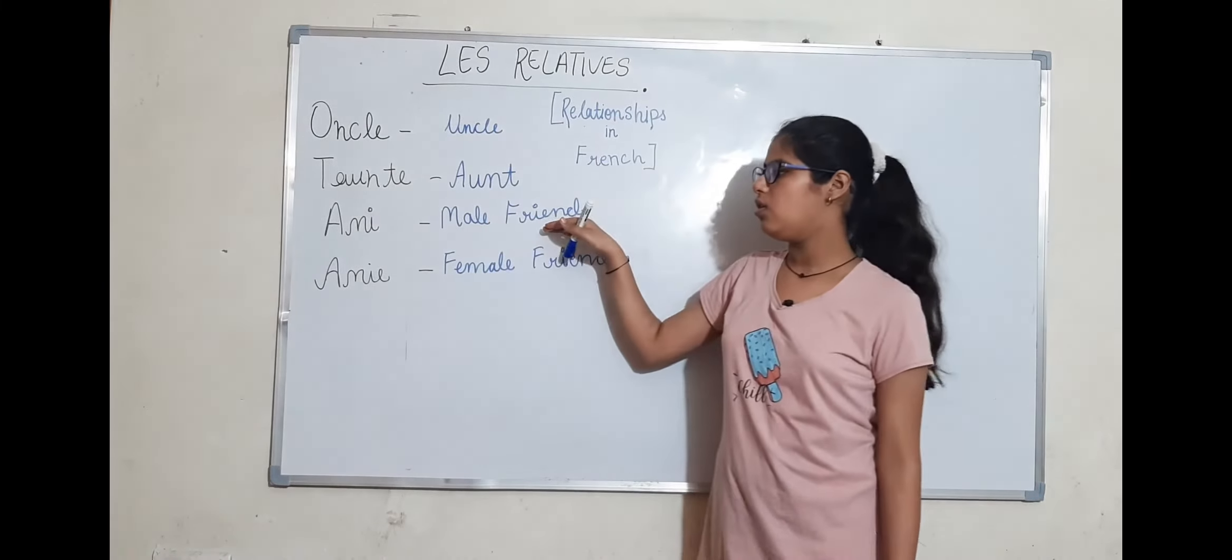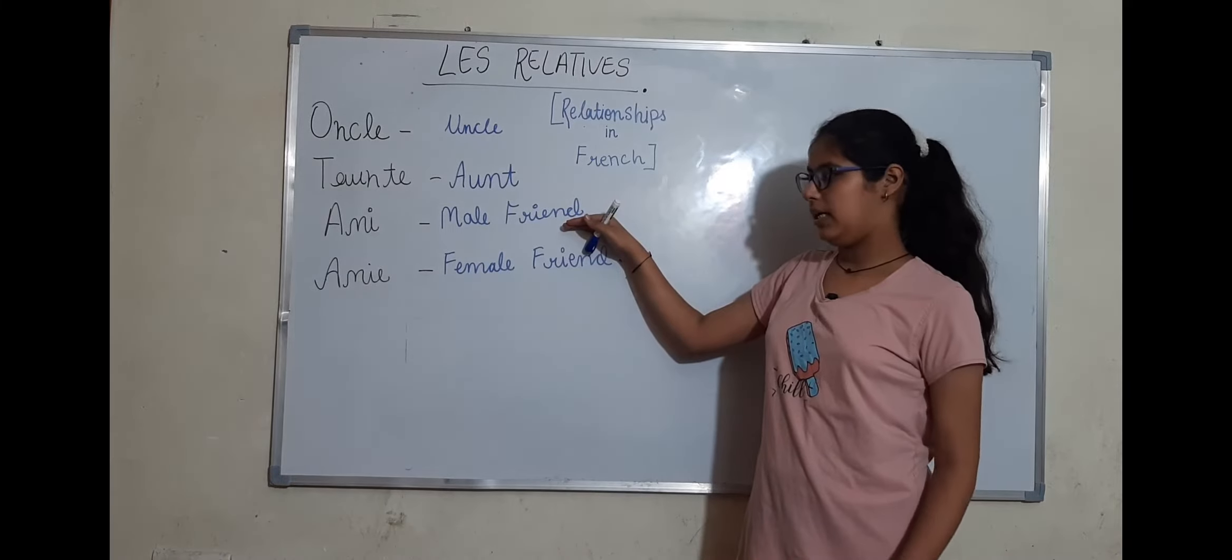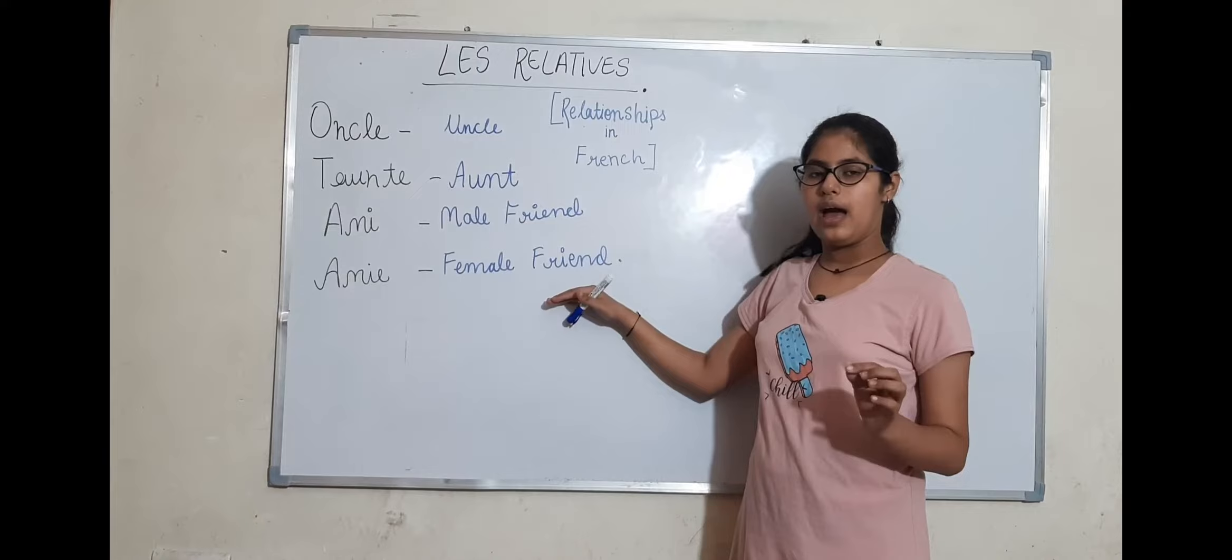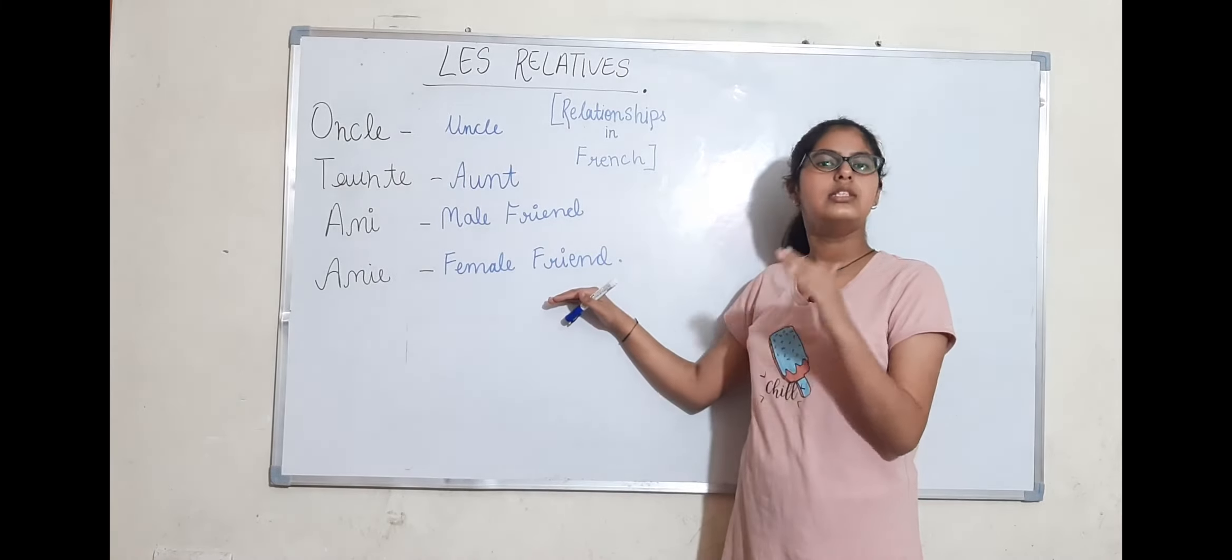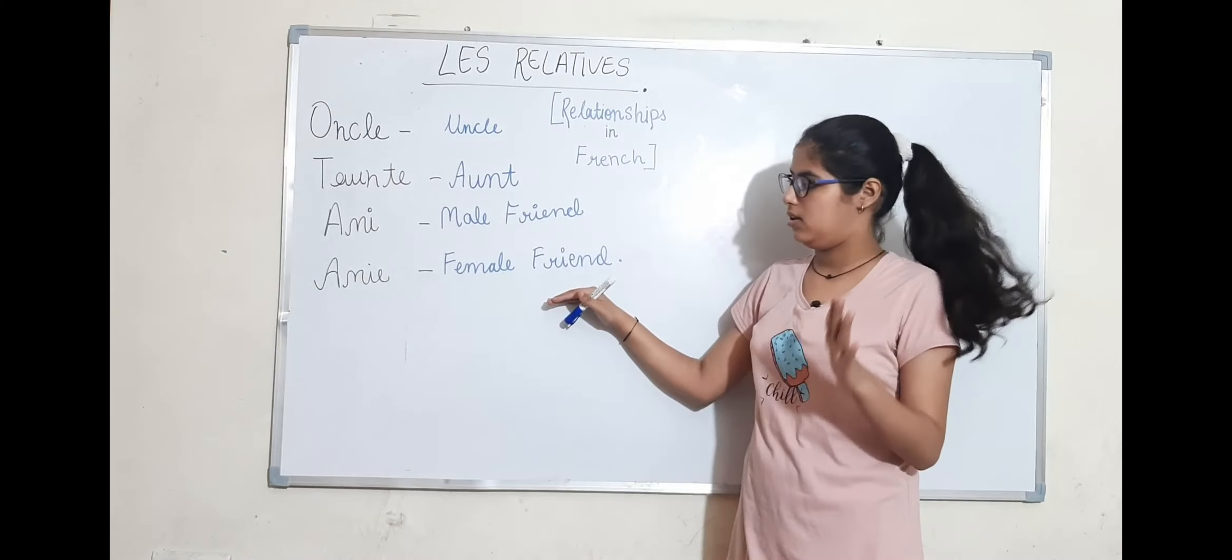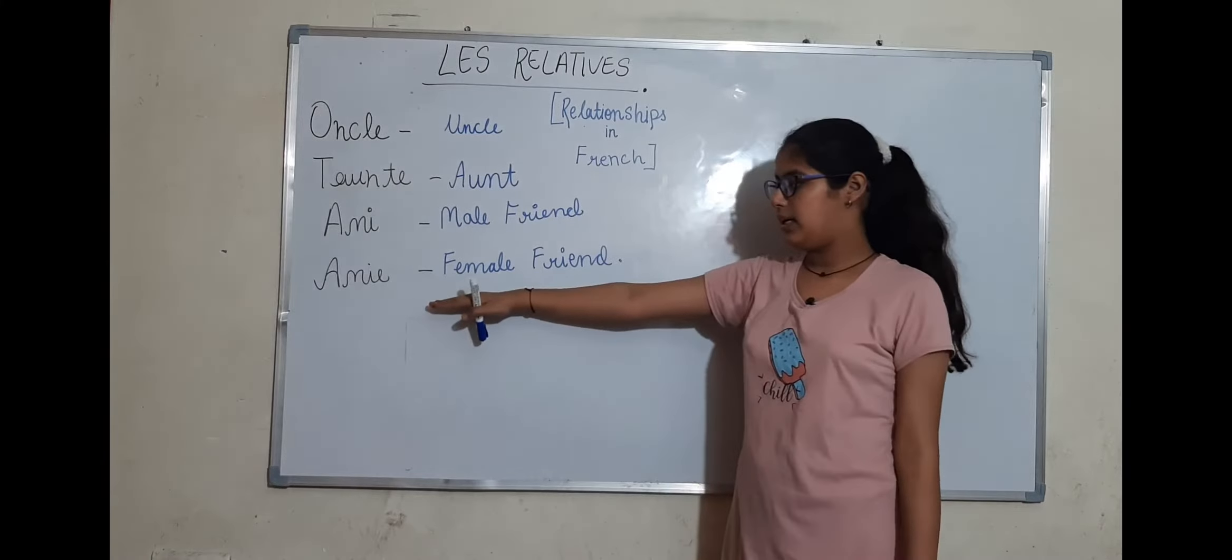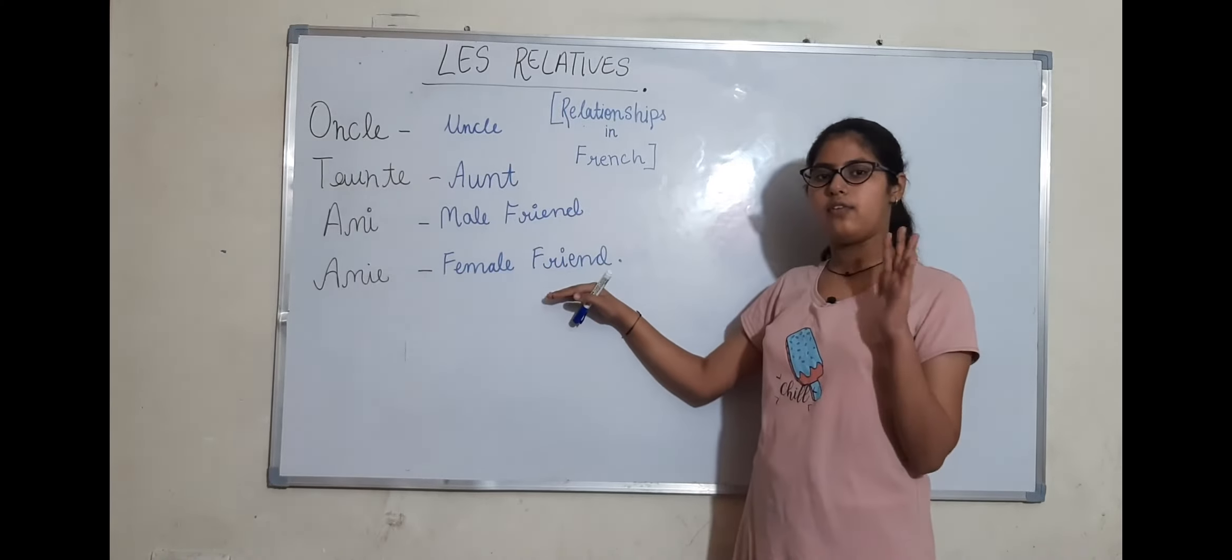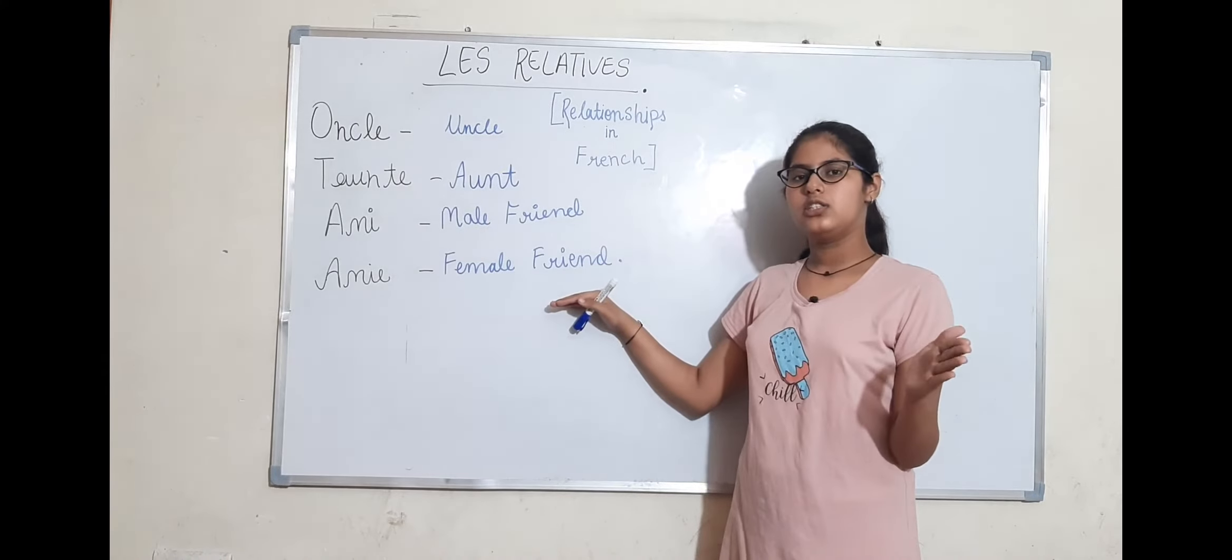Ninth, Ami, and tenth, Amie. The pronunciation is similar. So ninth, Ami, which means your male friend. If you have a friend who is male, then Ami. Then tenth, Amie, which means your female friend. If you have a friend and she is a girl, you are going to use Amie.